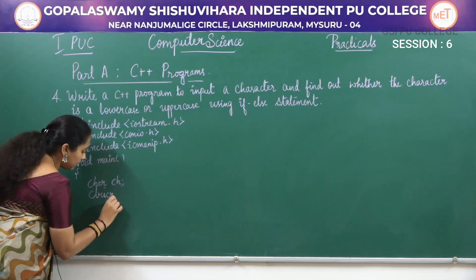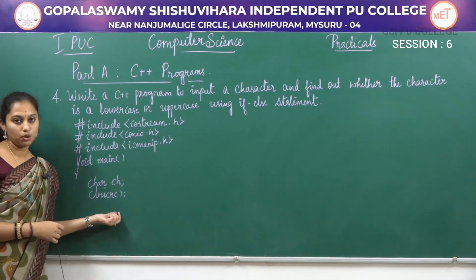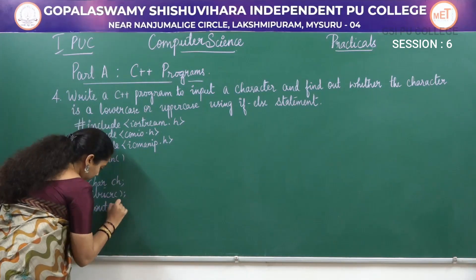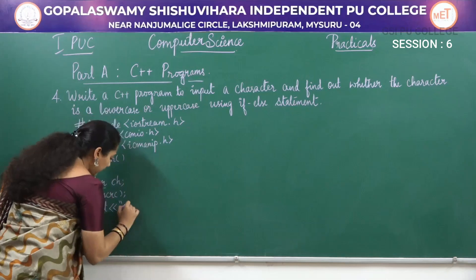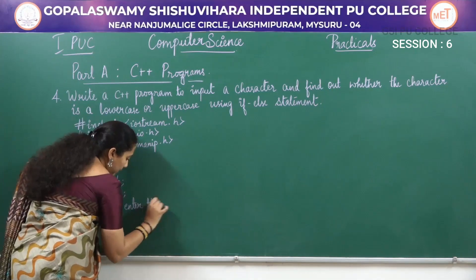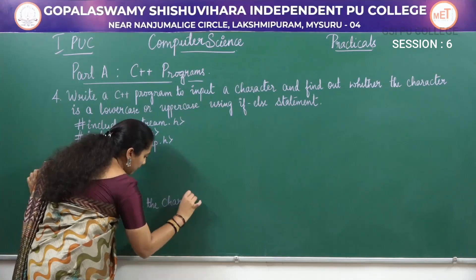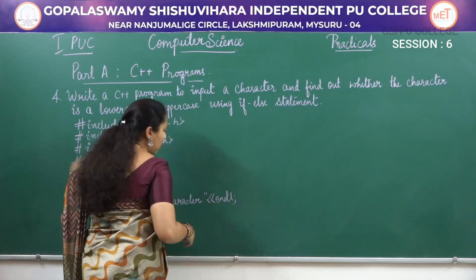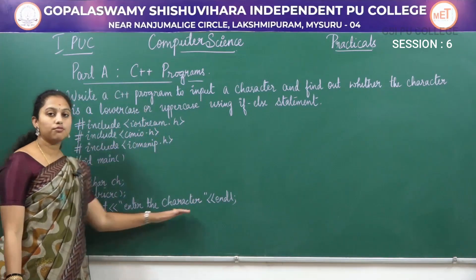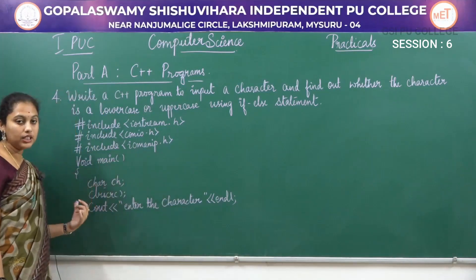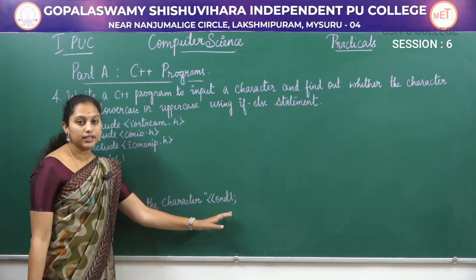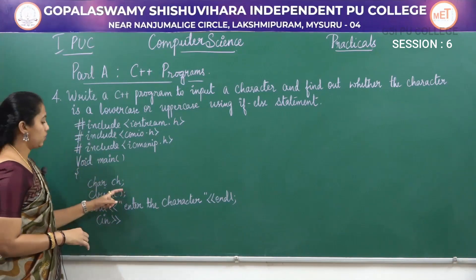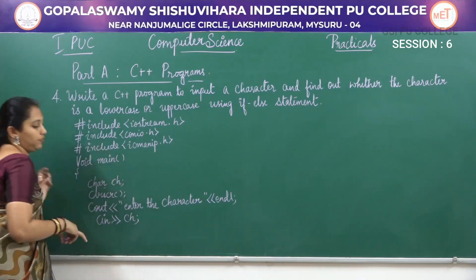I am using the clrscr function to clear the previously generated output on the display screen. In the cout statement, I am going to display a prompt message. I am using endl here because it represents the end of the line, so in the next line we have to enter the data. Using the cin statement, I am going to enter the character into variable ch.